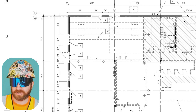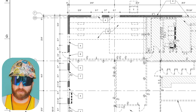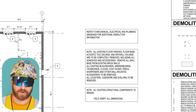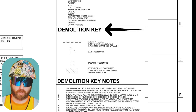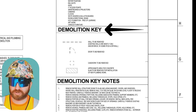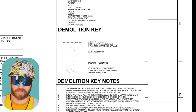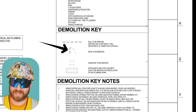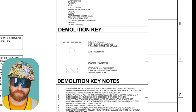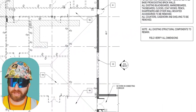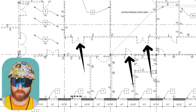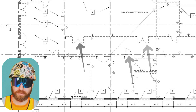Before we jump back to the floor plan, this demolition plan also has a demolition key. This key or legend shows symbols and the associated scope with that symbol. If we look at the second one down, this is a symbol of a door that needs to be demoed, and it says right next to it 'door to be removed.' Looking at the plan, I can see a series of doors and walls that need to be removed as part of this demolition.